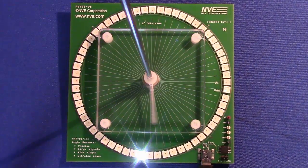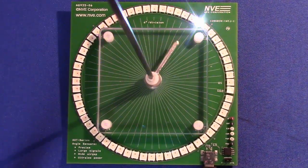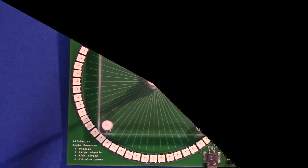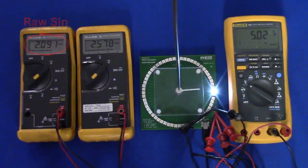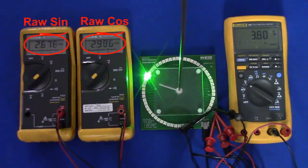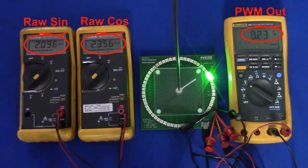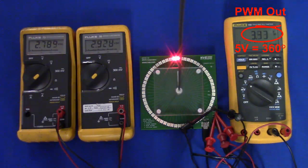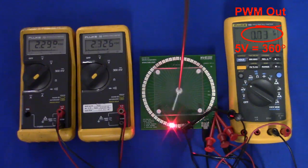It shows the accuracy of these remarkable sensors. There are test points for the sine and cosine raw sensor outputs, and there's a PWM output for the calculated calibrated angle, five volts corresponding to 360 degrees.